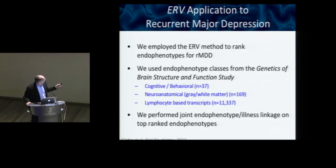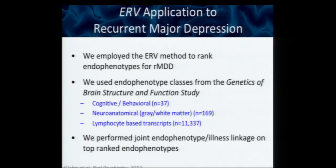We're going to use the ERV approach to look for genetic influences of major depression, focusing on recurrent major depression. We used endophenotype classes from the Genetics of Brain Structure and Function study: 37 cognitive and behavioral measures, 169 neuroanatomic measures (gray and white matter), and about 11,000 lymphocyte-based transcripts. With 37 measures you could probably rank them yourself, but doing it with all 11,000 transcripts would be incredibly difficult — and this is where the ERV approach becomes essential.